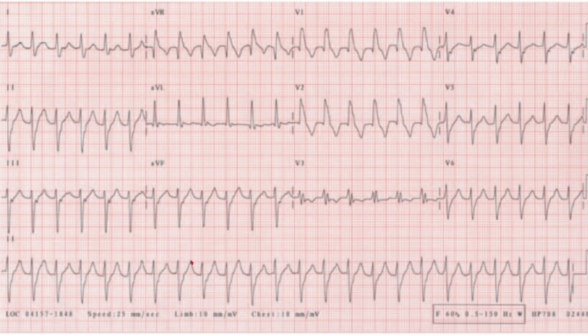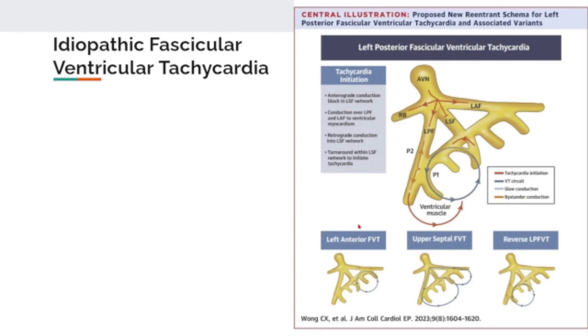There are no obvious P waves visible anywhere along this rhythm strip. The rate is 142, and there is also a left anterior fascicular block. Based on these findings, this patient is diagnosed with idiopathic fascicular ventricular tachycardia.